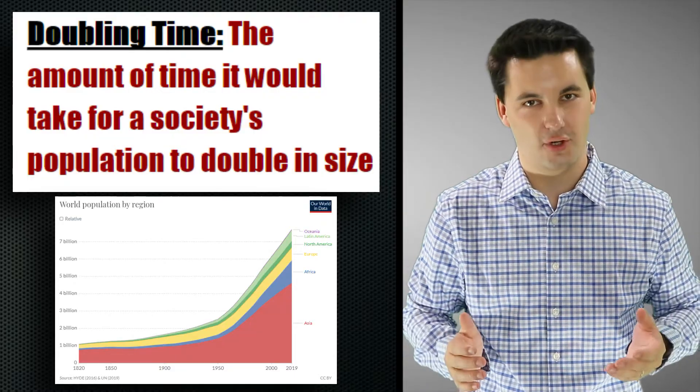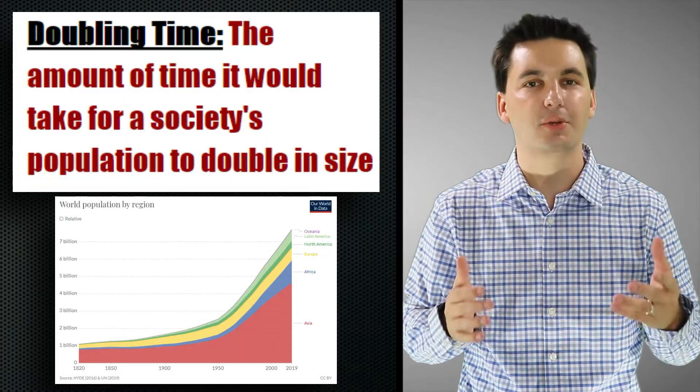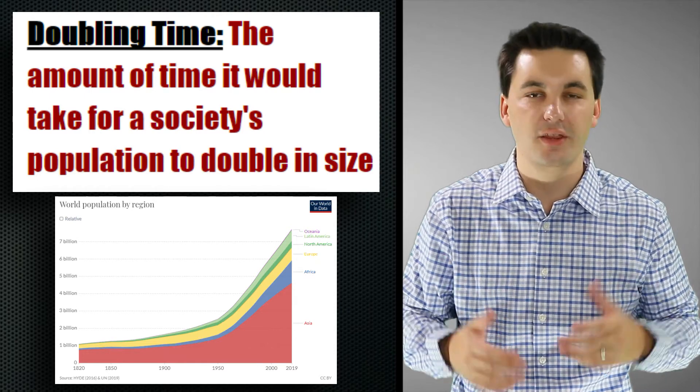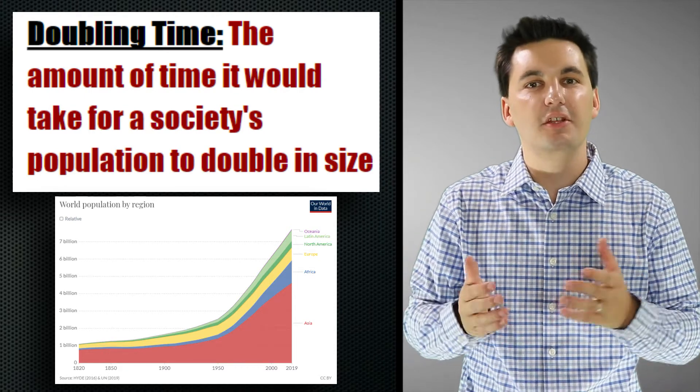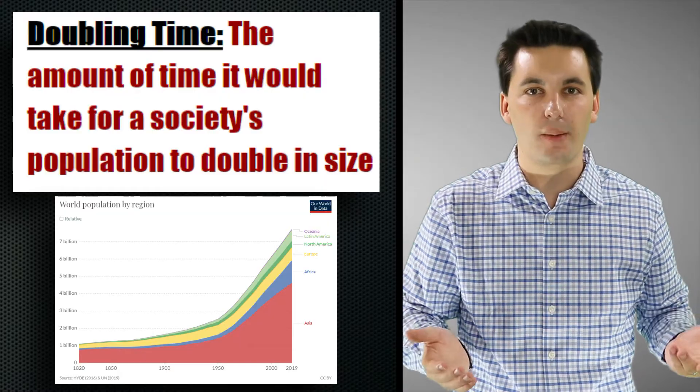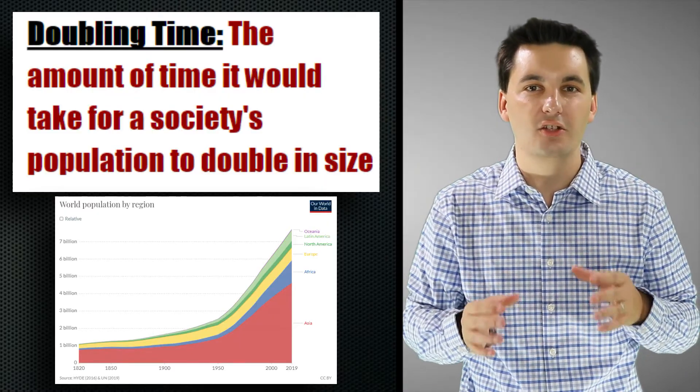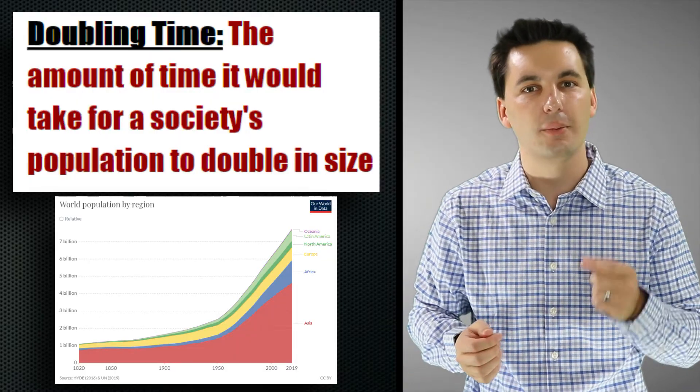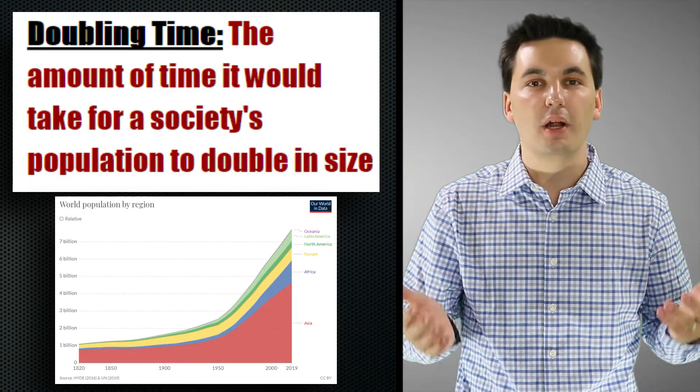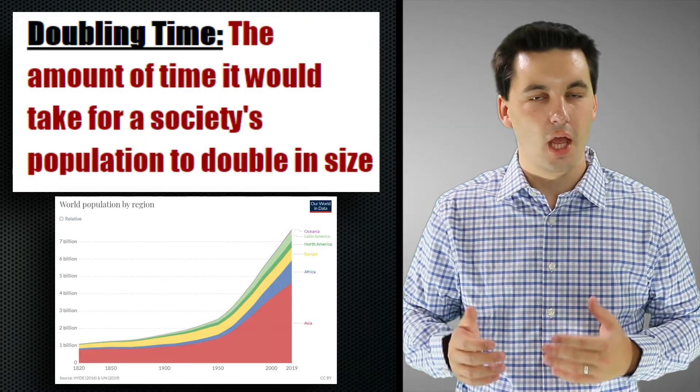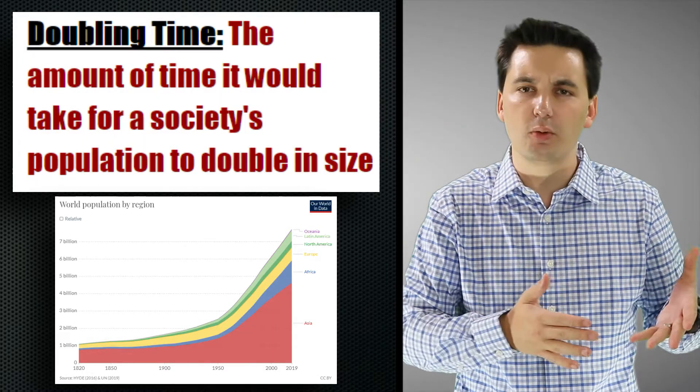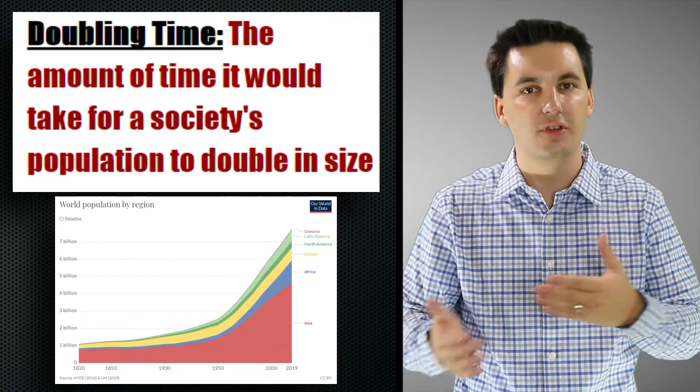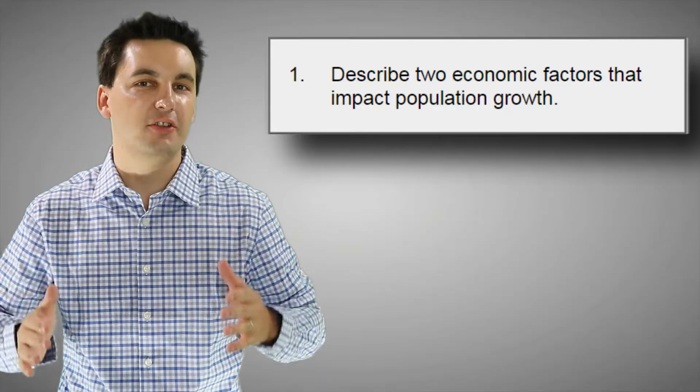Now we only just started to scratch the surface on all the different reasons why population growth changes. And before we wrap this up, I want to make sure you understand one more concept. And that's doubling time. Doubling time is the amount of time it would take for a population to double. This is important for societies to focus on. Because if they don't understand what's happening with their population growth, they're not going to be able to plan accordingly. And they're going to run into some pretty big issues. Countries need to study what's happening with the demographics in their country so they can better make decisions on how to address the needs and wants of their people.